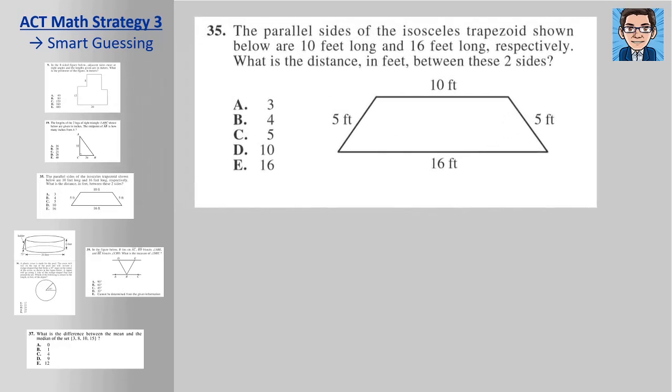In this one, we're trying to find the length between the two sides. So we are trying to find this between the 10 and the 16. So even just looking at that, obviously 16 and 10 are too big if we're trying to find this, and this has to be smaller than five, right? If this is five, then this can't be five. So that gets us down to three and four are our only real logical choices. And you could stop there and guess.